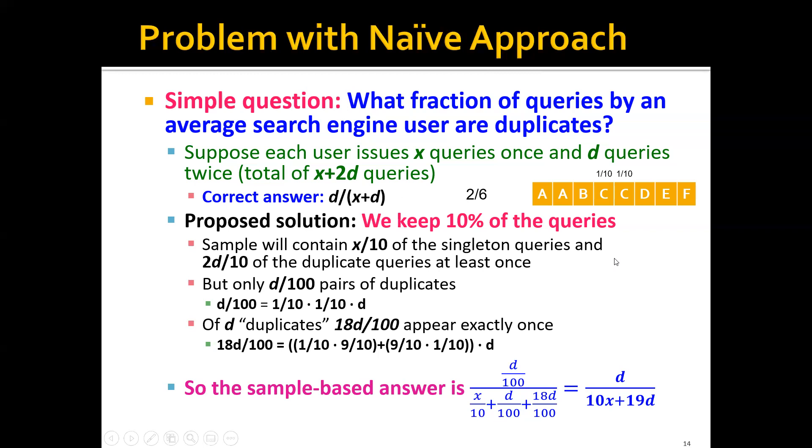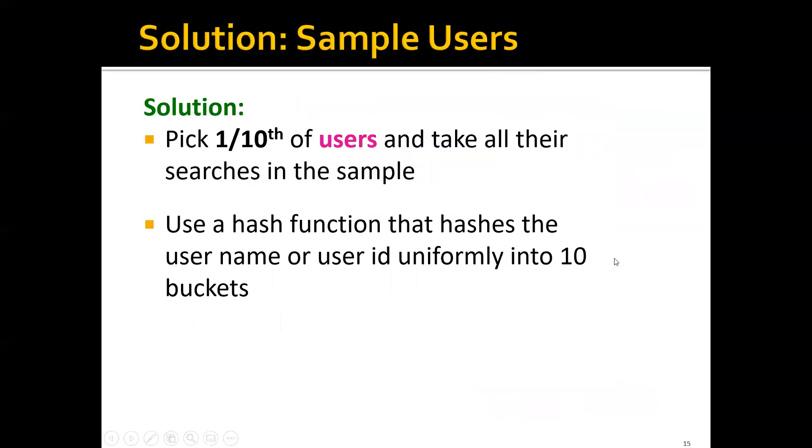So how do we address this problem? The answer is actually quite simple. Instead of picking queries randomly, we can pick one-tenth of the users and then take all their searches in that sample. In this case, the sample can stay unbiased and we can have a much better estimate of the correct answer.